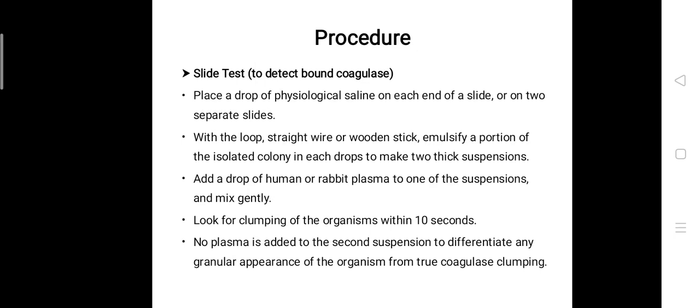When you have emulsified the colonies in the normal saline, the emulsified colonies should look milky white in color. After that, you have to add a drop of human or rabbit plasma to one of the suspensions and mix gently.